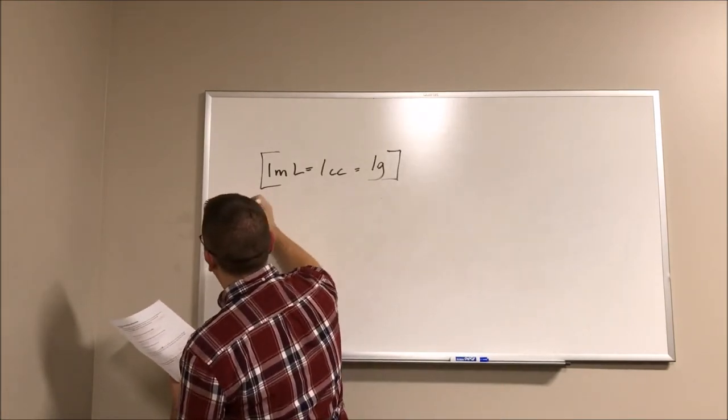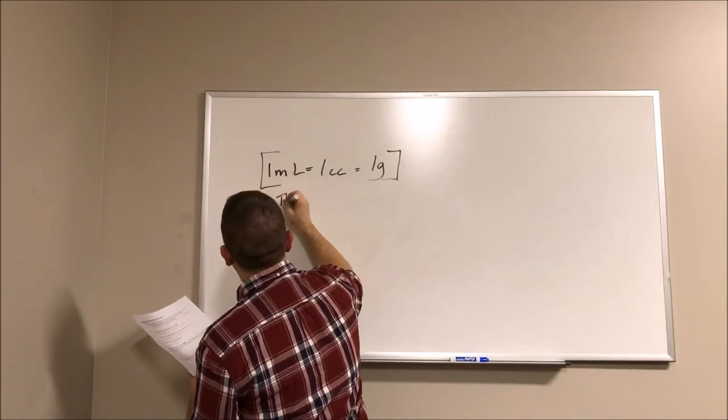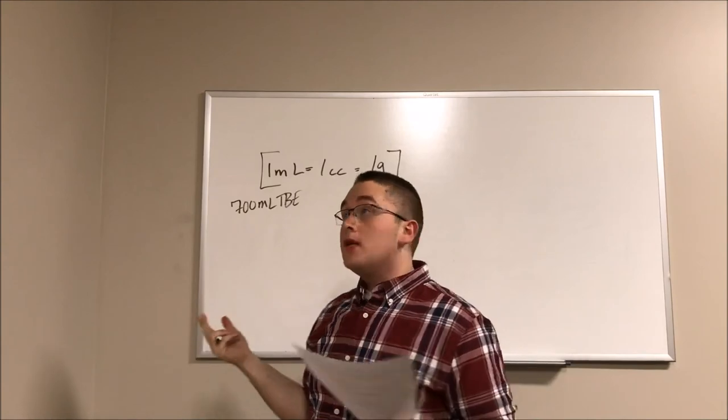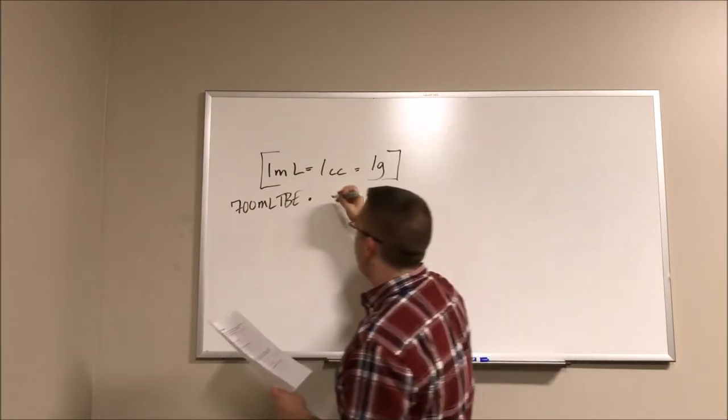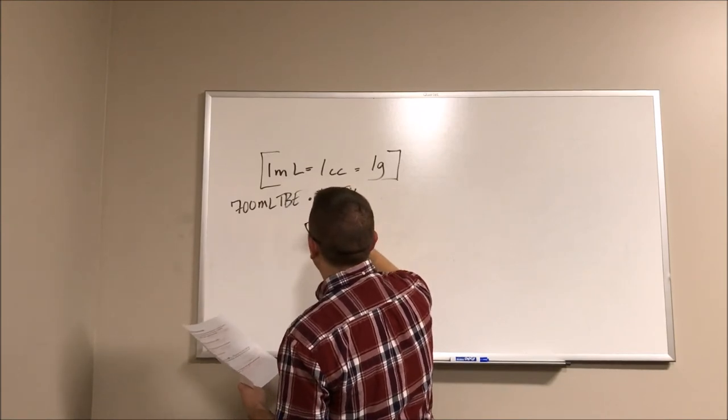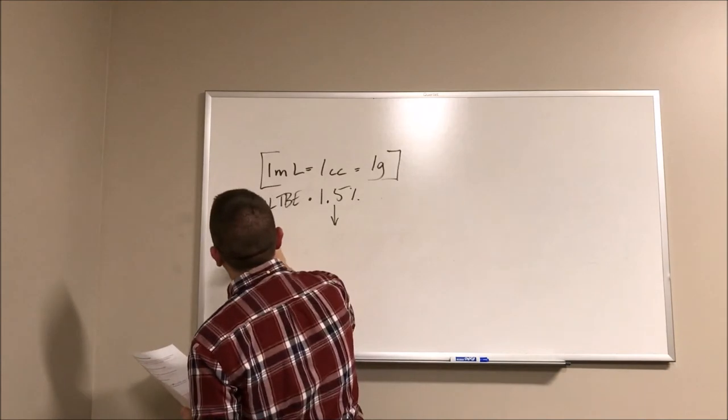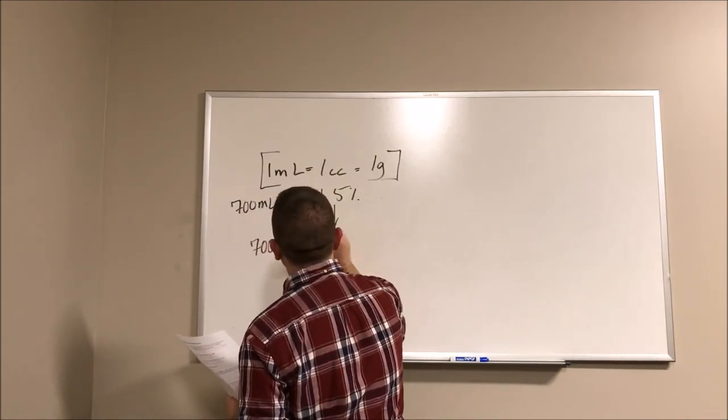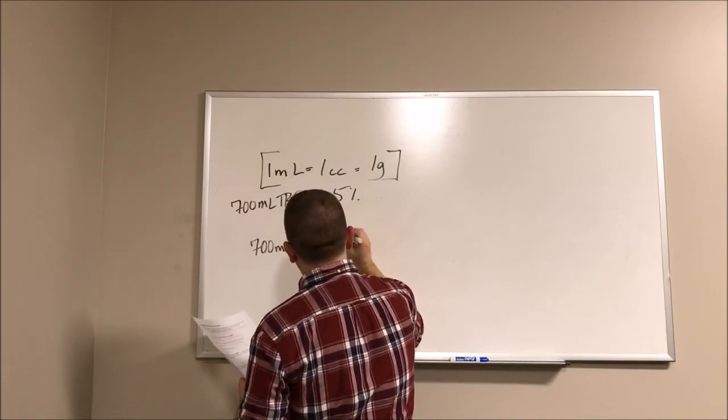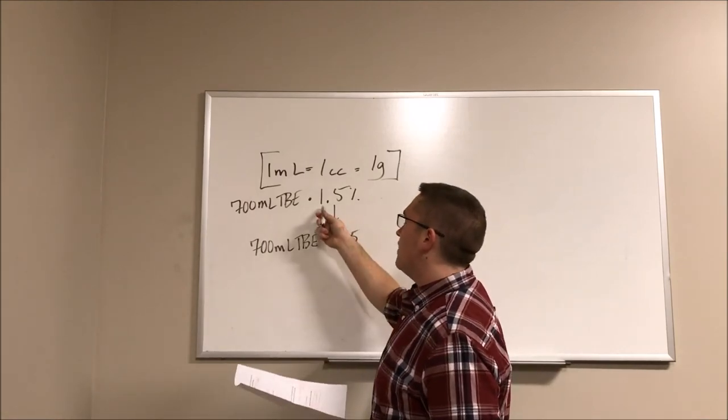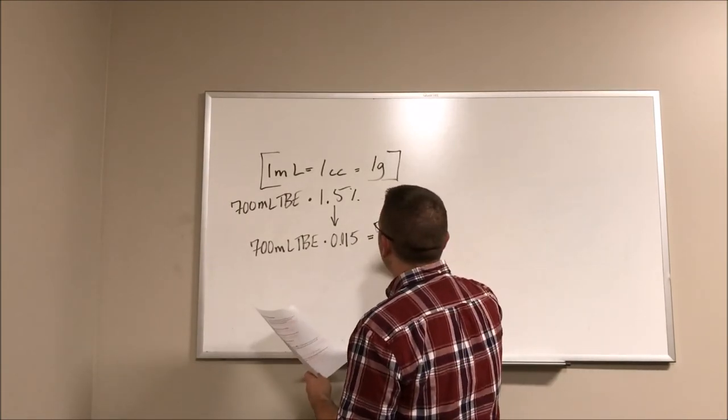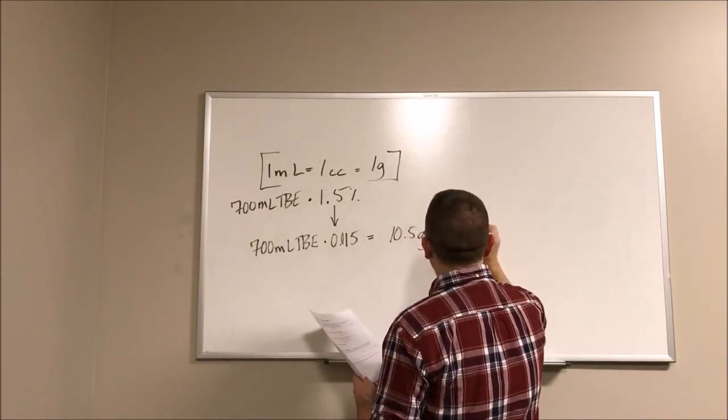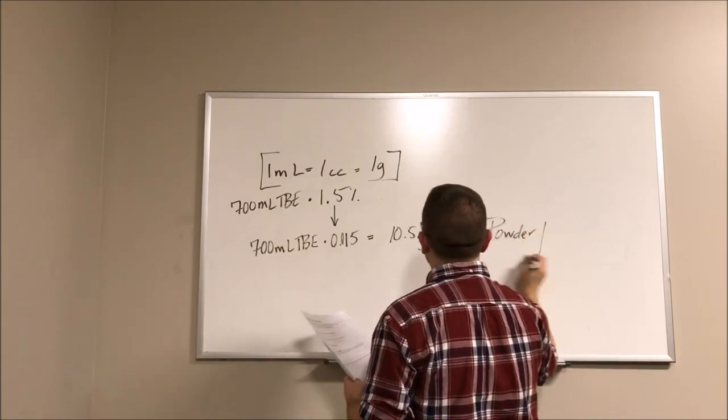Basically, we know that we're starting off with 700 milliliters of TBE and we have to add this agarose powder to make the gel work. So we're starting off with 700 milliliters and we know that 1 milliliter is equal to 1 gram. So we are going to do times this by 1.5%. But we have to convert this so it works in the equation. So 700 milliliters of TBE times 0.015. Whenever we get percentages, just divide it by 100 and that will give you the decimal that you need to get. And then we're going to multiply that out and get 10.5 grams of agarose powder.